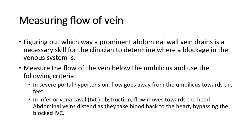In severe portal hypertension, flow goes away from the umbilicus towards the feet, whereas in inferior vena cava obstruction, flow moves towards the head. Abdominal veins distend as they take blood back to the heart, bypassing the blocked inferior vena cava.